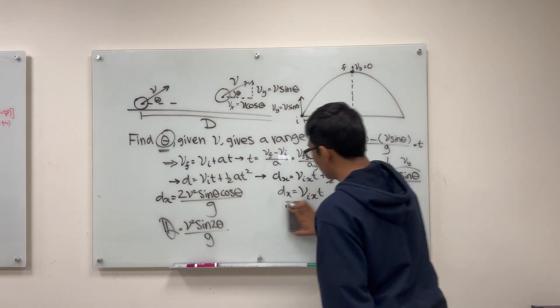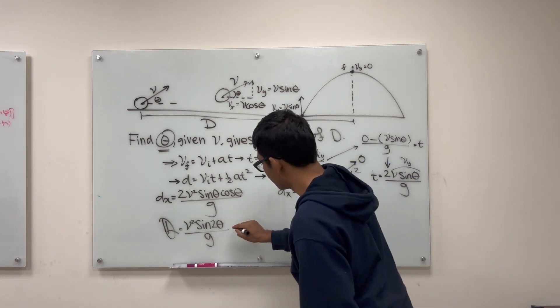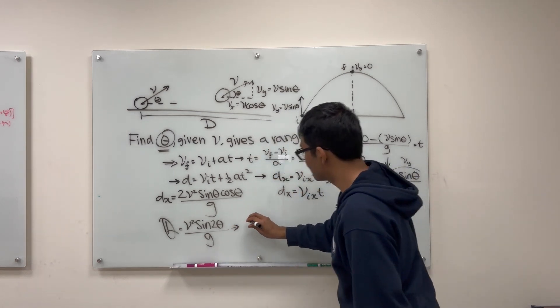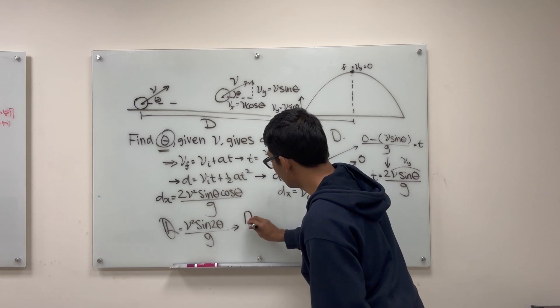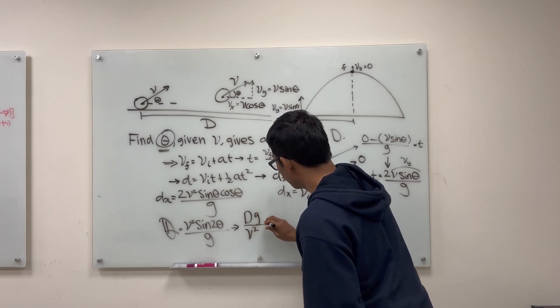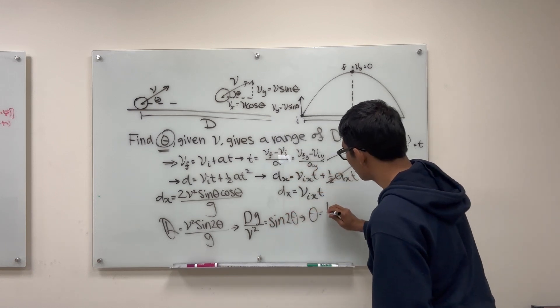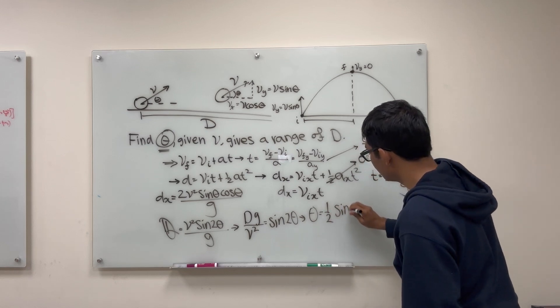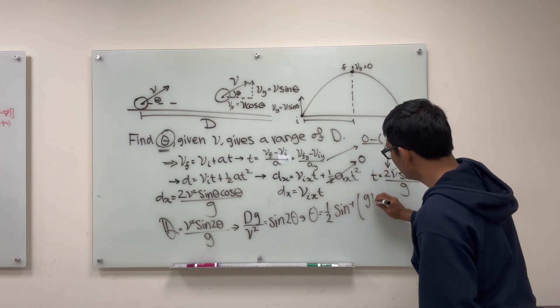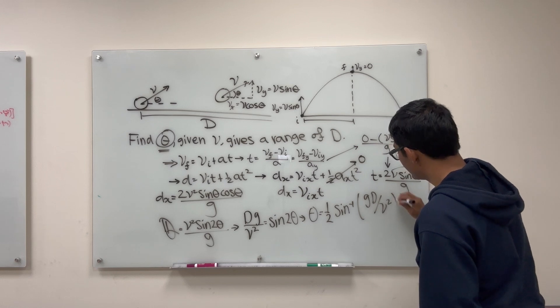So if I just solve for theta over here, what do I get? So let's multiply both sides by g and divide by v squared. So I'll get dg over v squared is equal to sine 2 theta. So that theta is one half arc sine of g d over v squared.